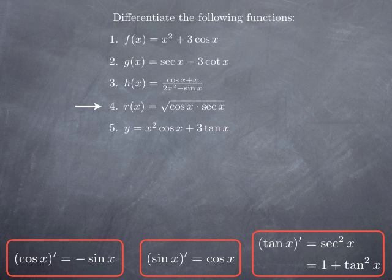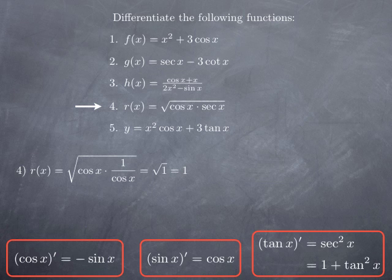This fourth function looks complicated, and it looks like something that we don't know how to differentiate yet. However, if you try to rewrite things only in terms of sine and cosine, you see that what we have is really the square root of cosine x multiplied by its reciprocal, and therefore it's really the square root of 1 — in other words, the constant function 1. But the derivative of a constant function is 0, and therefore this is the derivative of the fourth function.